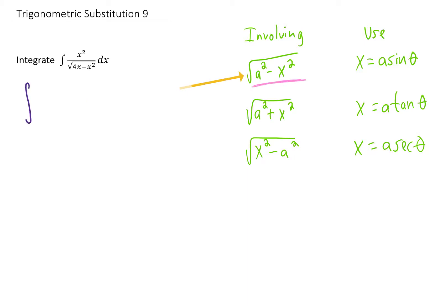And it might help us to write this integral in this way first. Notice I just factored a negative out from underneath the square root. Now taking our cue from some previous videos, we're going to complete the square on the x squared minus 4x.